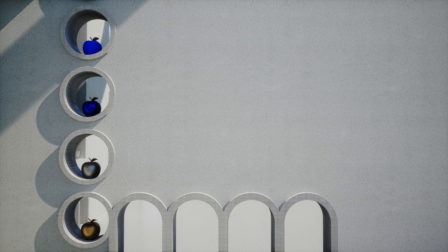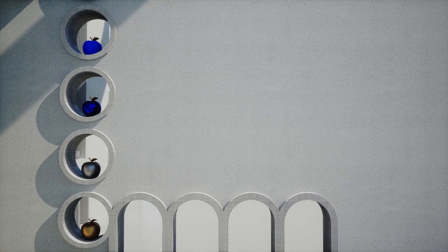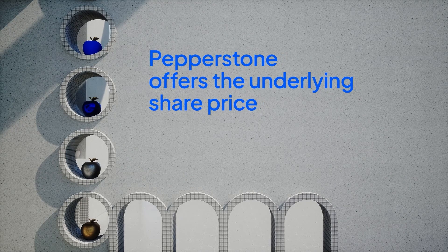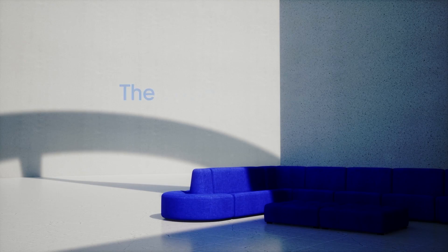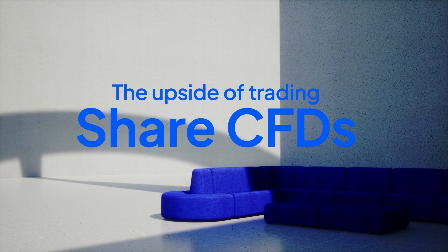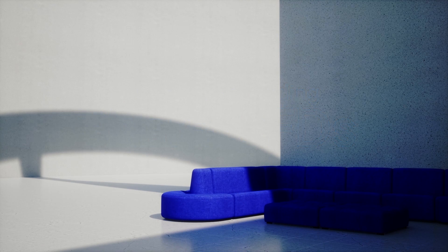Pepperstone offers traders the underlying share price, and you decide when to close. CFDs replicate all the monetary benefits of direct share ownership, bar voting rights. One: with low commissions and no minimum on US shares, it means an ultra short-term trader can buy or sell in short time frames.